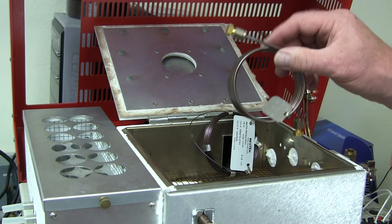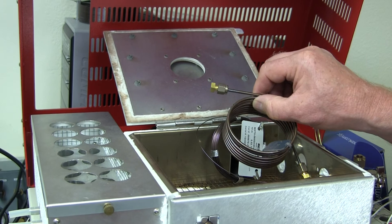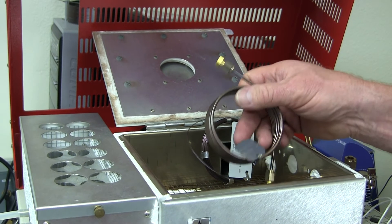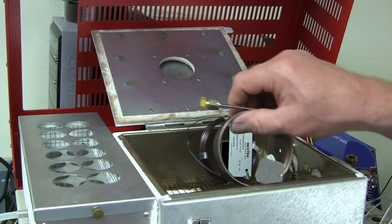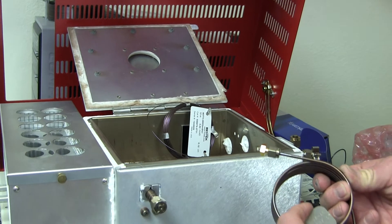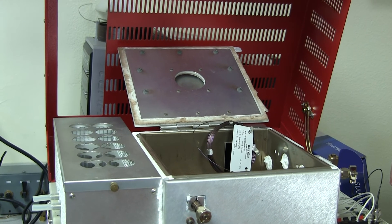It sometimes happens that there's more than one column in a column oven, sometimes two or three or four. So you really have to know which column can take which temperature, and then when you are baking the column out, you may have to remove the column that doesn't have as high of a temperature limit from the oven in order to bake out the one that does have the higher temperature limit.